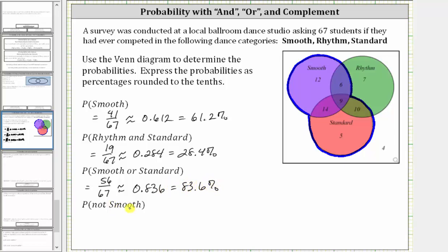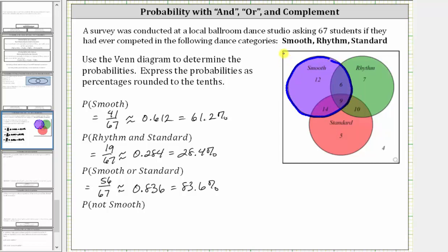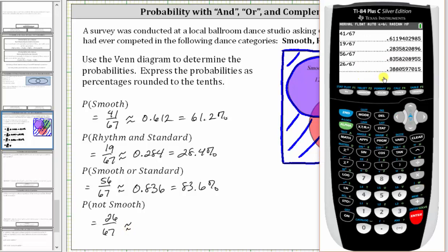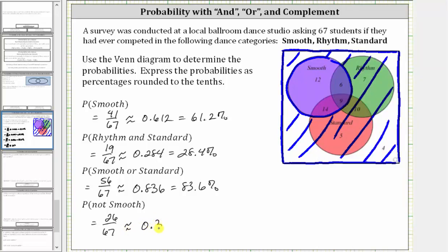For the last example, we're asked to find the probability of not smooth, which includes all the students that are outside the smooth set. If this is the smooth set, all the students not competing in smooth are in this region here. We know there are 67 students altogether and 41 students that competed in smooth. 67 minus 41 is equal to 26. There are 26 students not in the smooth set — we can also determine this by adding 7, 10, 5, and 4, which is 26. Therefore the probability of not smooth is 26/67, which is approximately 0.388, which is 38.8%. I hope you found this helpful.